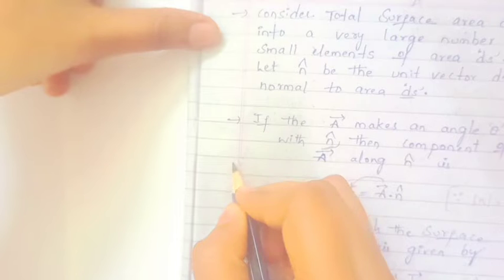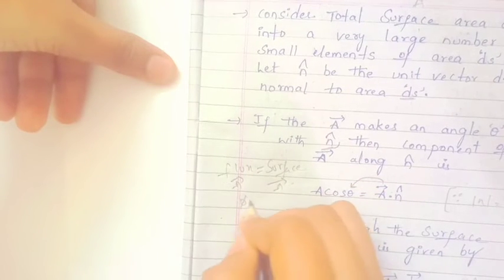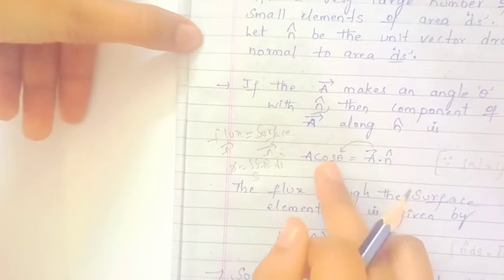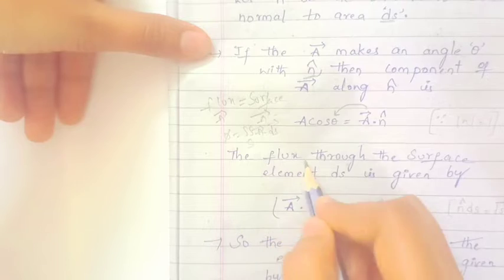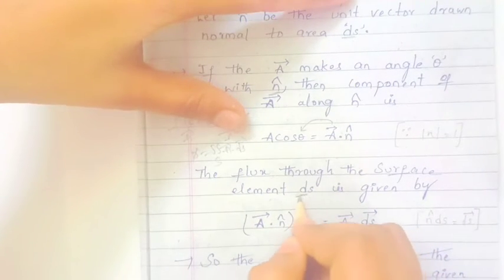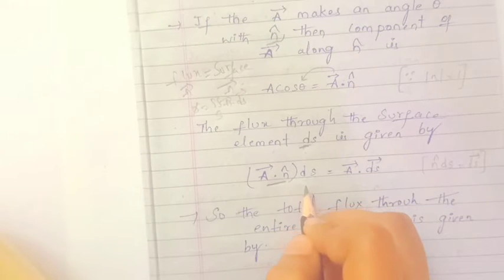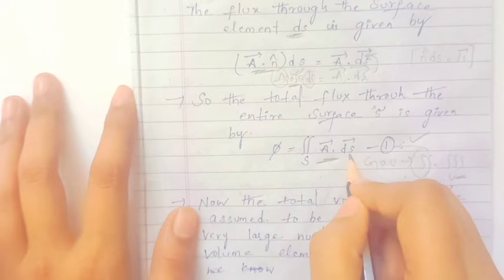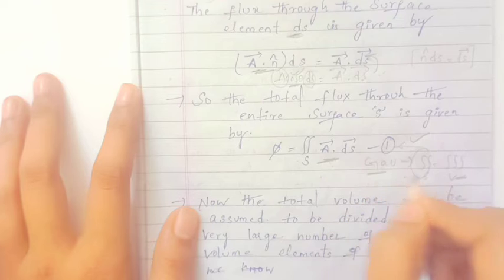So basically, A cos theta equals A dot n̂, which is the component of A along n̂. The flux through the surface element dS is given by A dot n̂. Therefore, the flux through the entire surface is given by the integral of A dot n̂ dS.